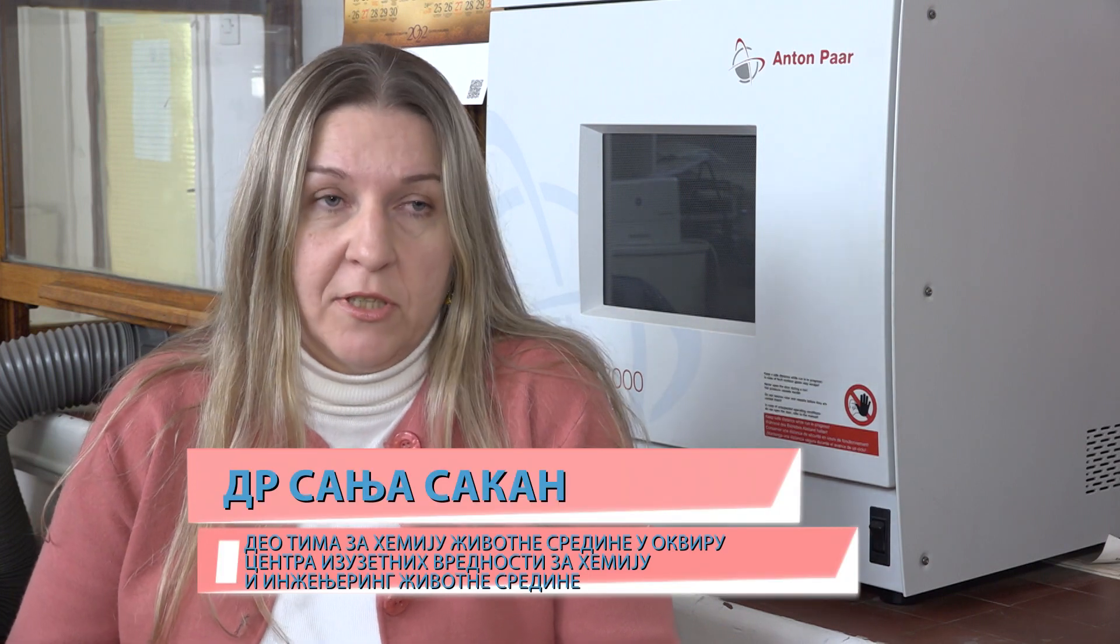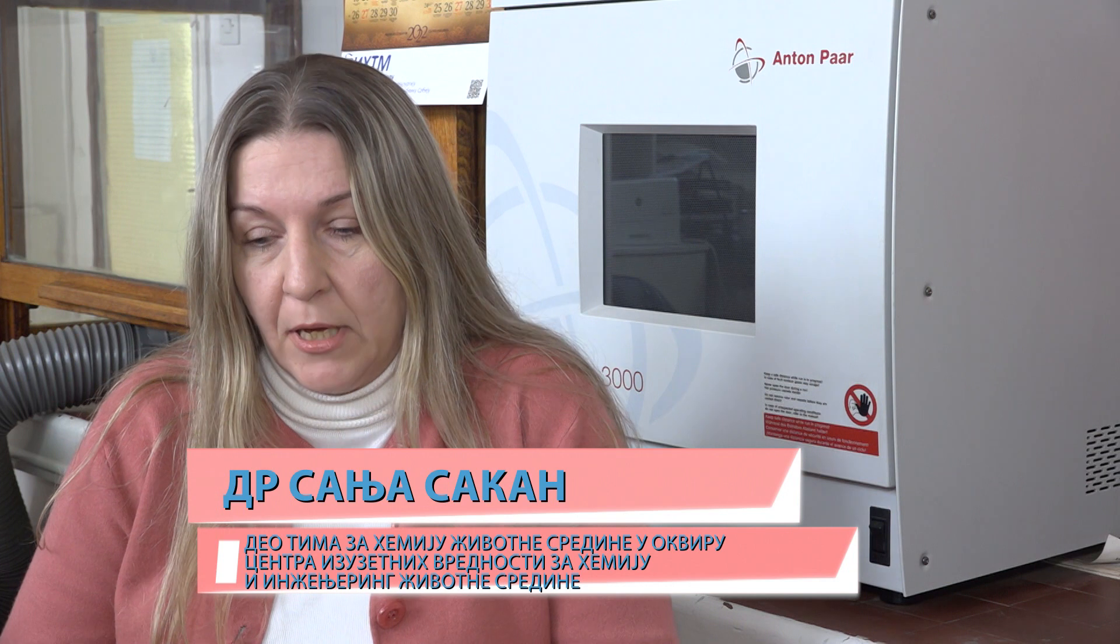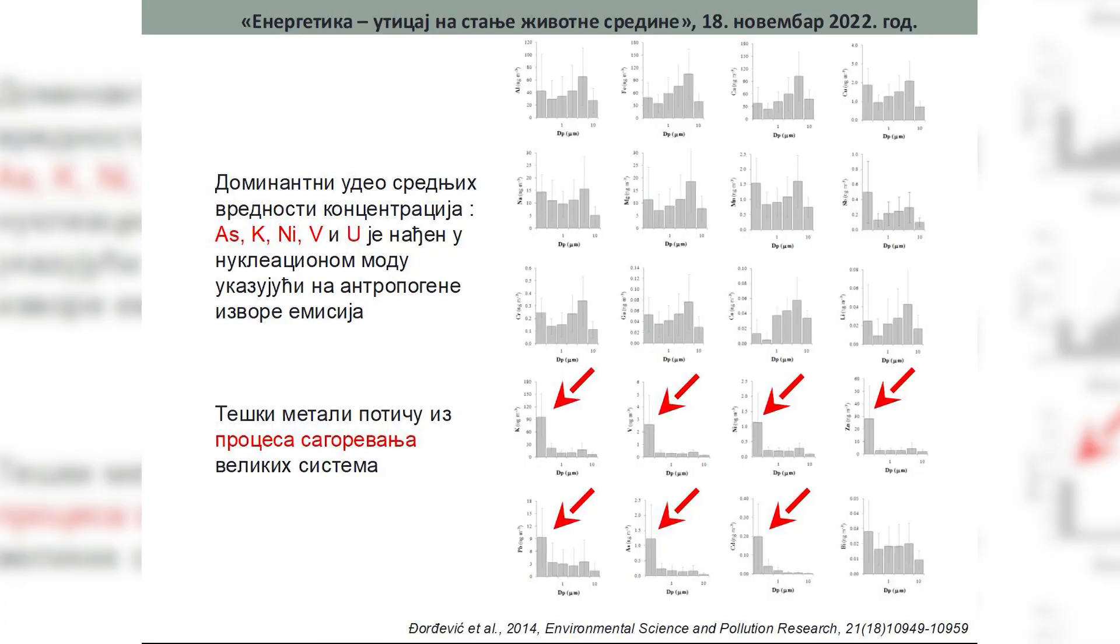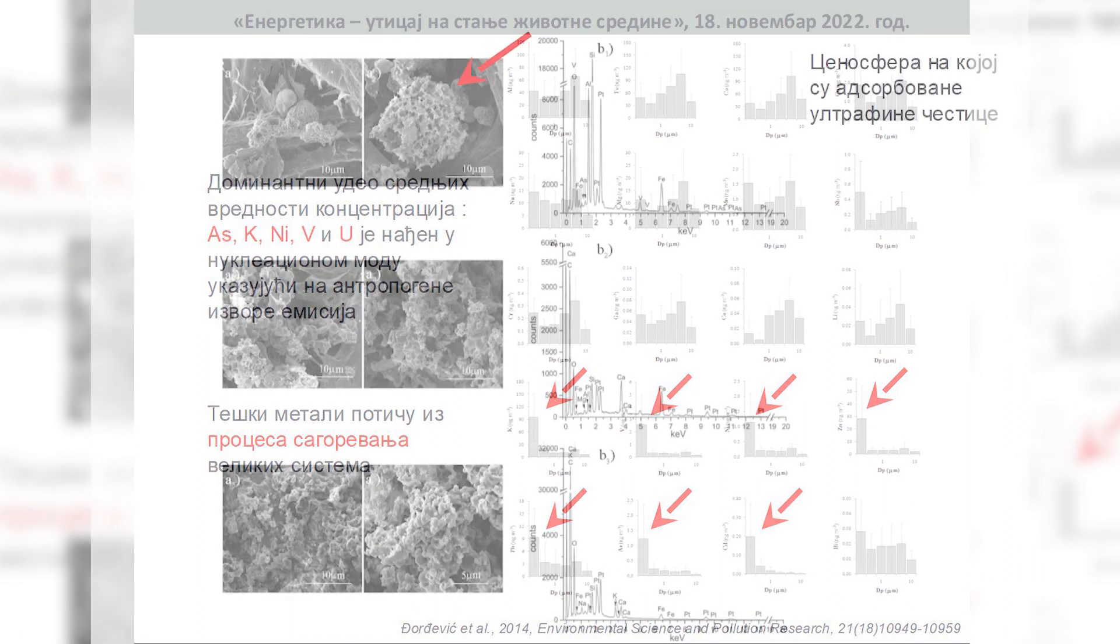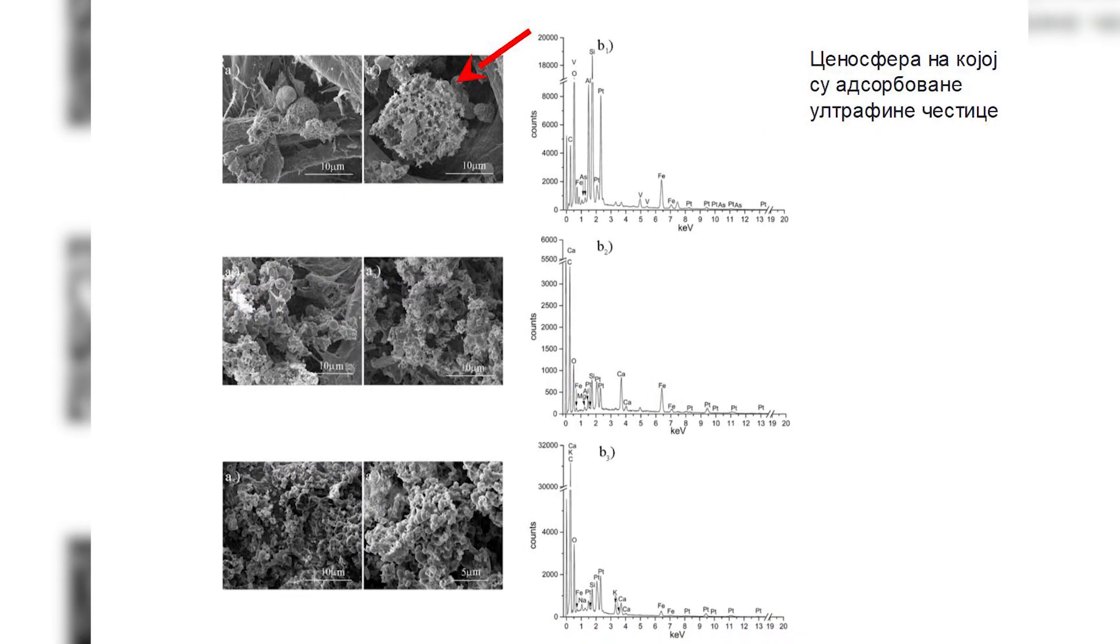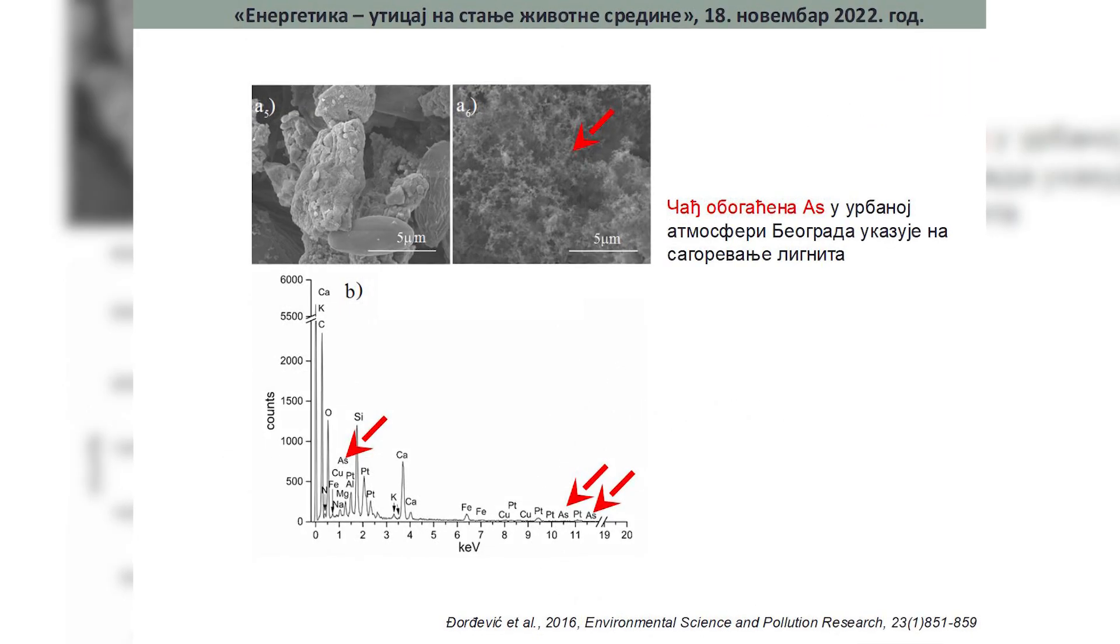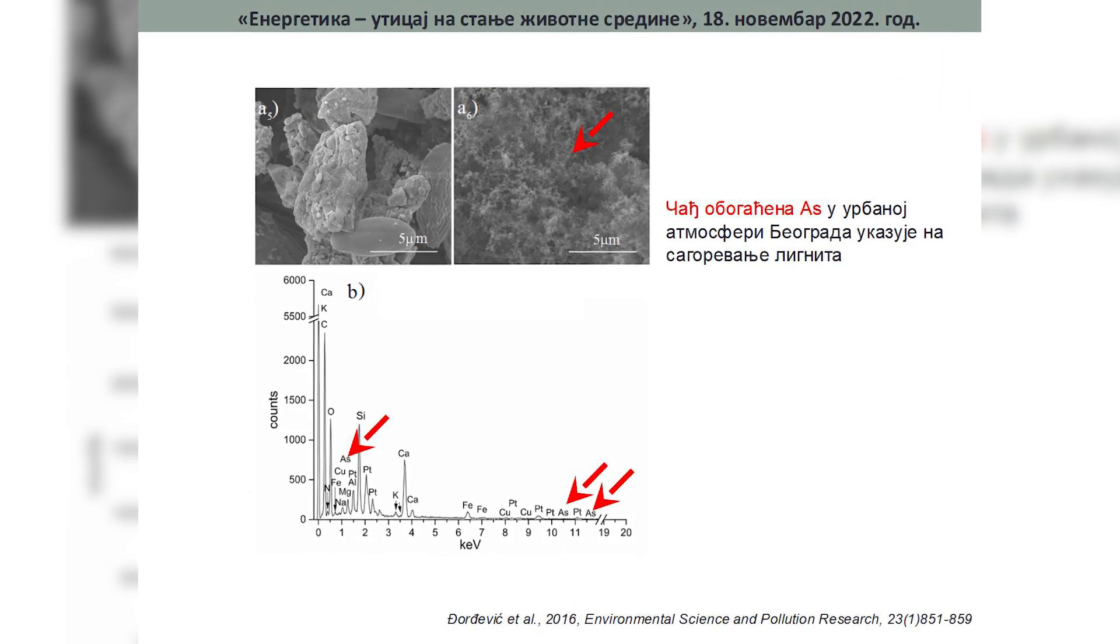Istraživanja koja su deo istraživanja okru centra izuzetnih vrednosti, a čini smo ja grupa, odnose se na proučavanje teških metala i to njihove mobilnosti, biodostupnosti, zatim procene geohemijskog i antropogenog porekla, zatim procene rizika od zagađenja životne sredine navedenim elementima, kao i mogućih toksikoloških efekata koji ove elementi mogu imati na živi svet.